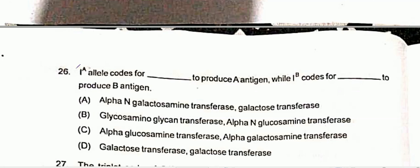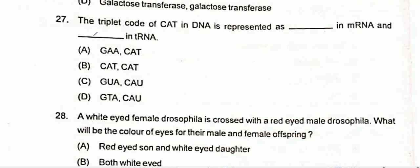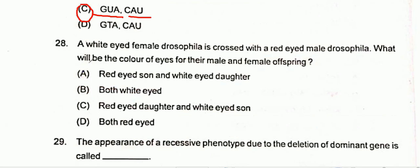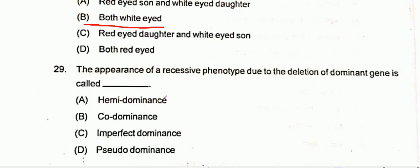Question 26: Iᴬ allele codes for alpha-N-galactosamine transferase to produce A antigen, while Iᴮ codes for galactosyl transferase to produce B antigen. Question 27: The triplet code CAT in DNA is represented as GUA in mRNA and CAU in tRNA. Option C is correct. Question 28: A white-eyed female Drosophila is crossed with a red-eyed male. The eye color of male and female offspring will both be white-eyed. Option B is correct. Question 29: The appearance of a recessive phenotype due to deletion of dominant genes is called pseudodominance. Option D is correct.